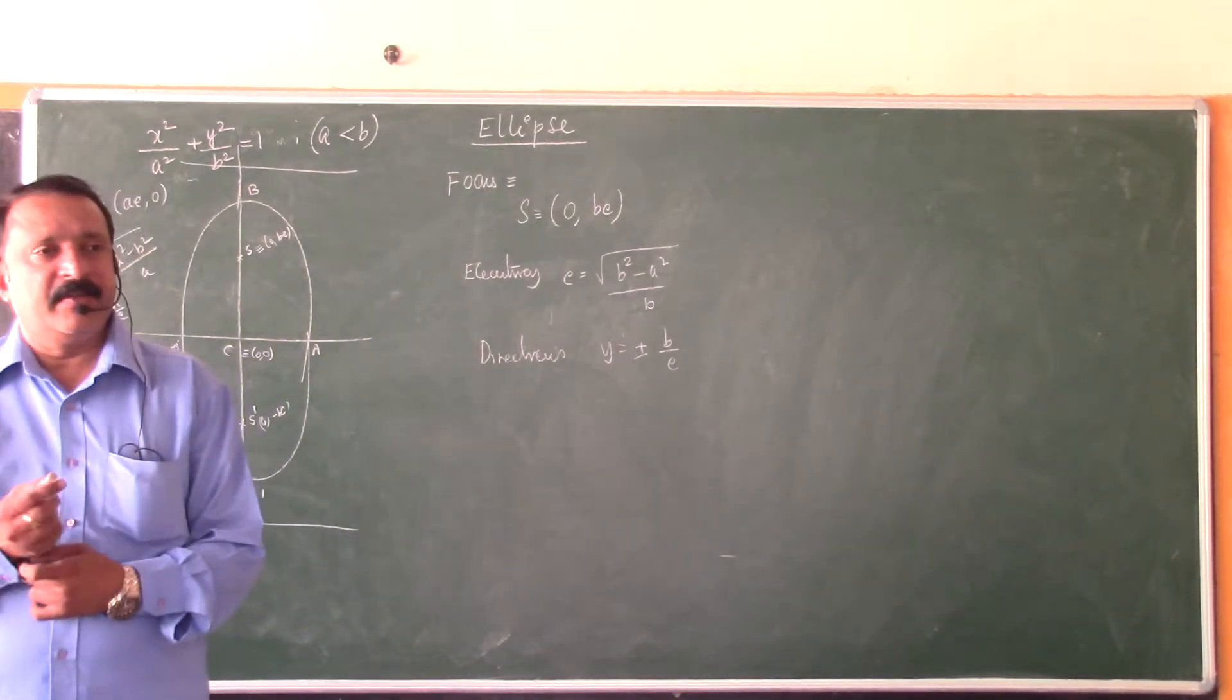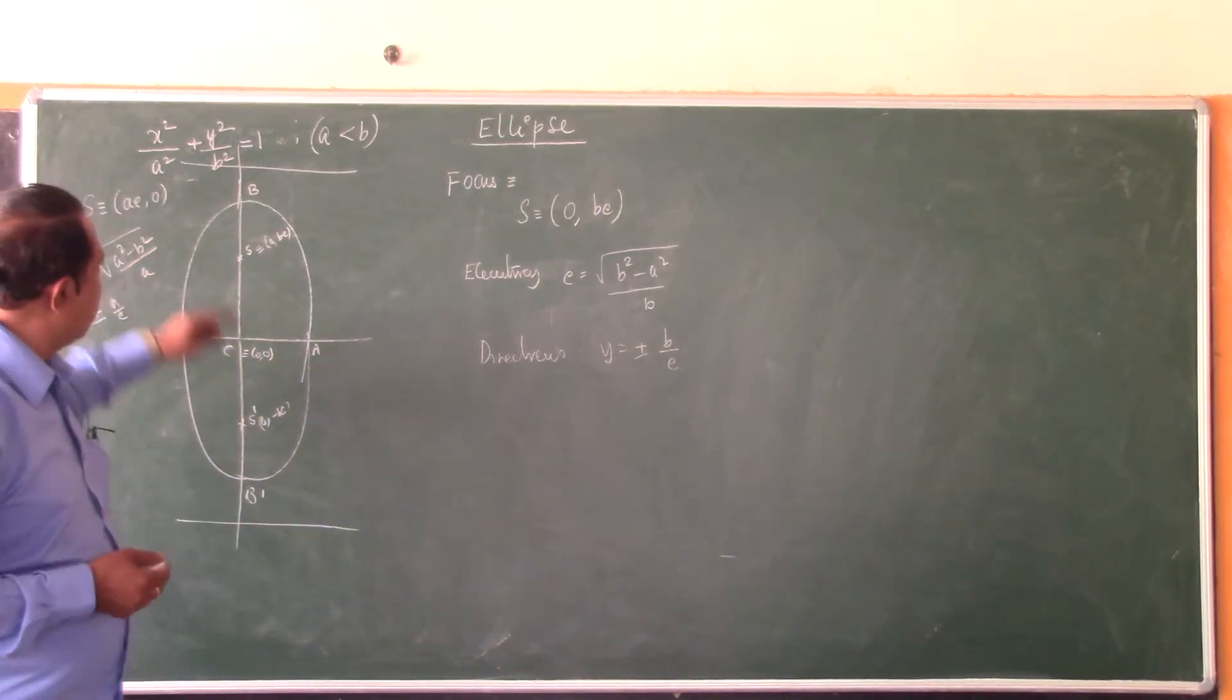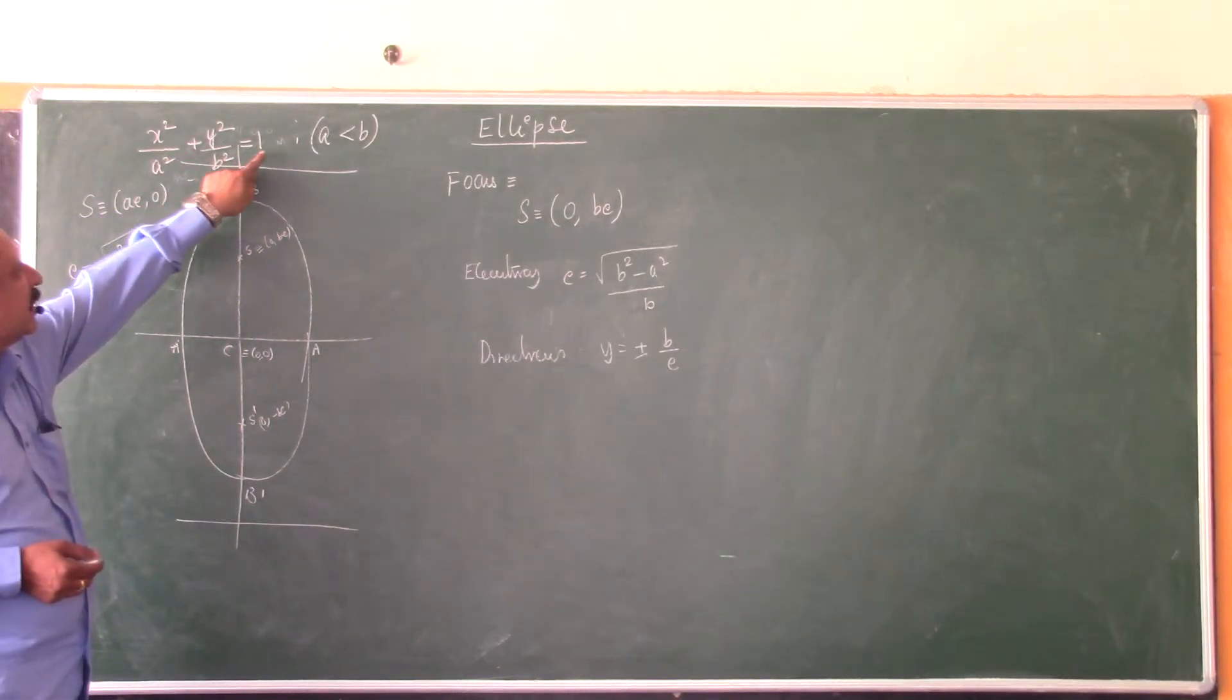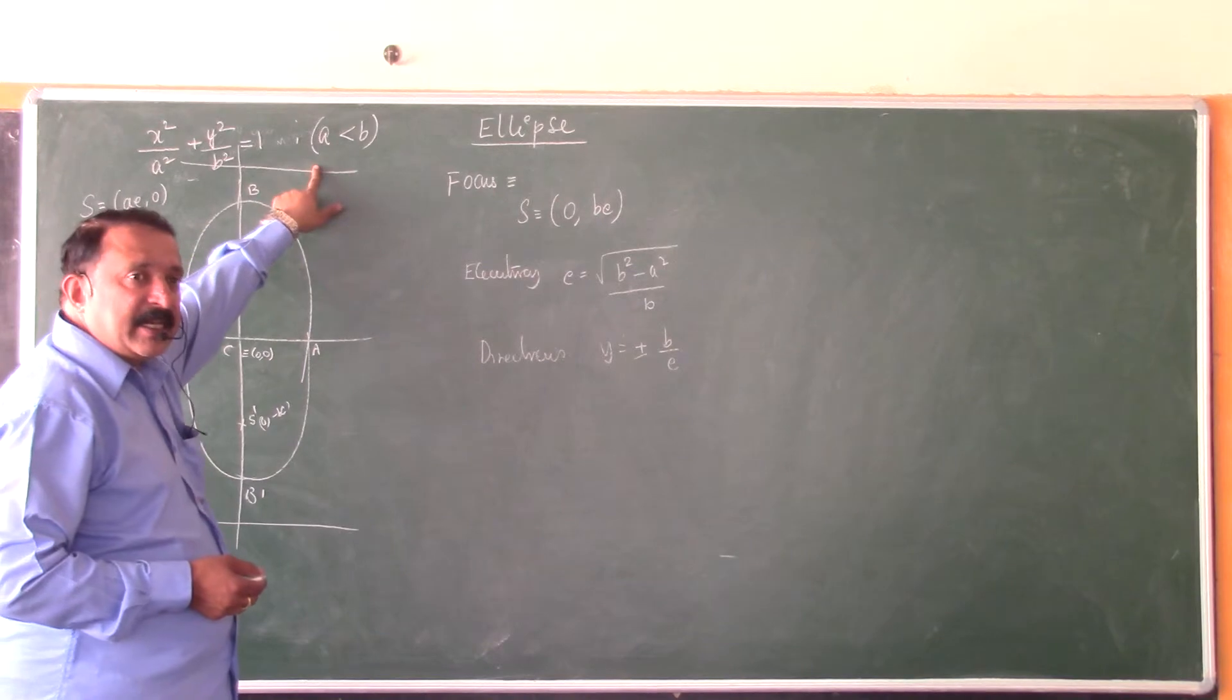Note these three details for the ellipse x² by a² plus y² by b² equals 1, if a is less than b.